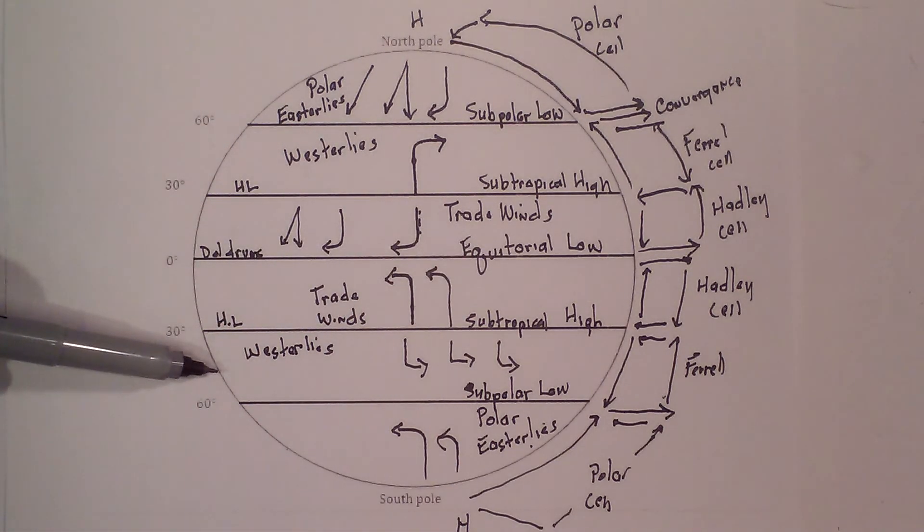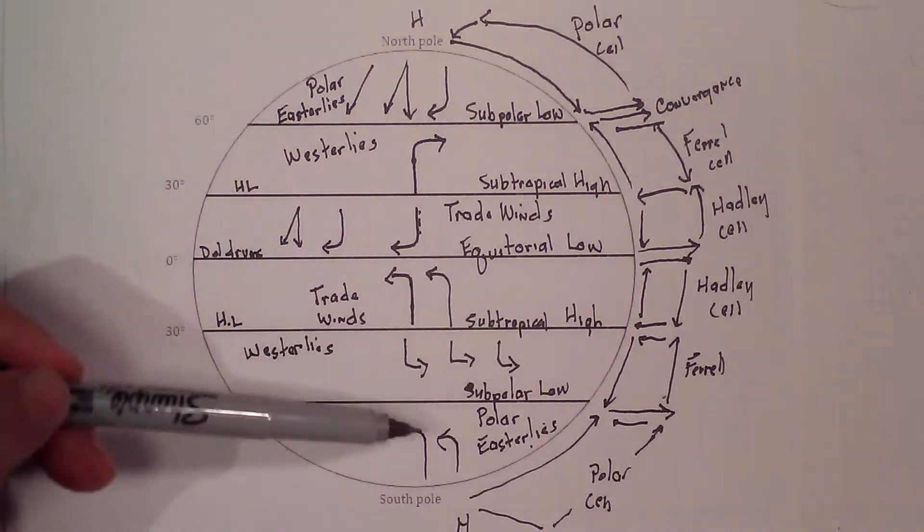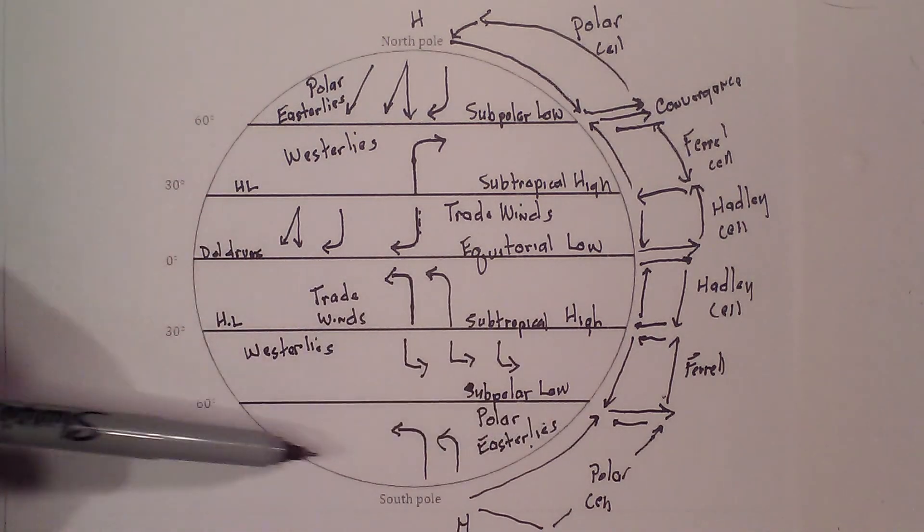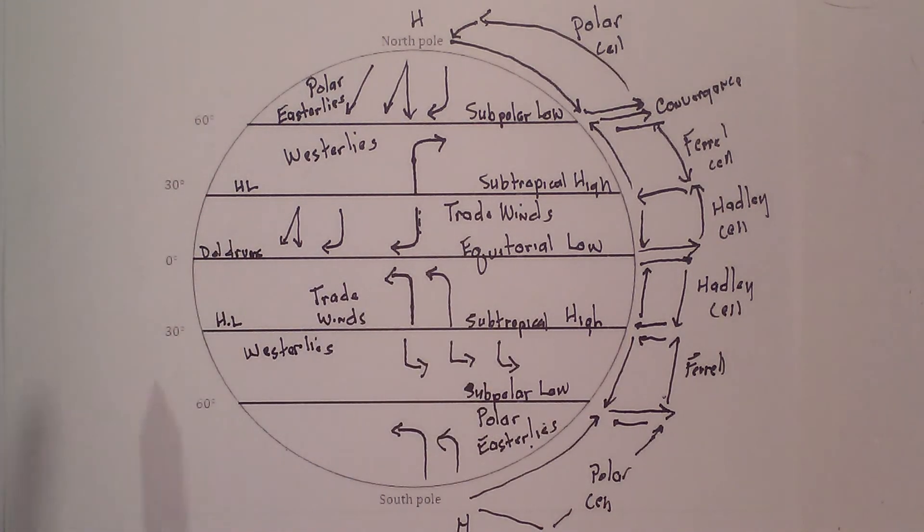And then here are the trade winds again going from east to west. Then the westerlies from west to east. And then the polar easterlies from east to west. I hope that helps in understanding global winds.